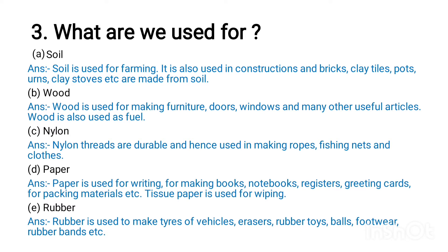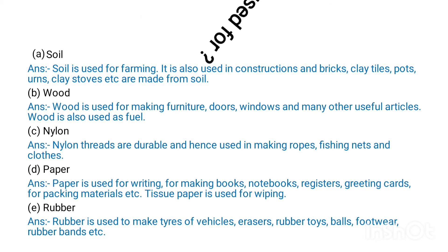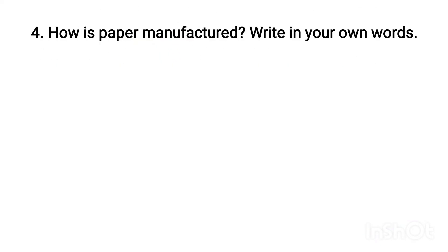E) Rubber: Rubber is used to make tires of vehicles, erasers, rubber toys, balls, footwear, rubber bands, etc. Question 4: How is paper manufactured? Write in your own words.